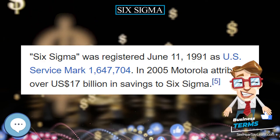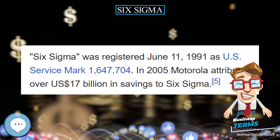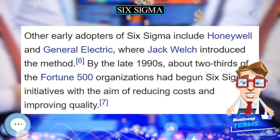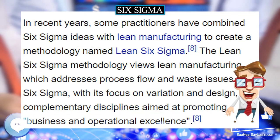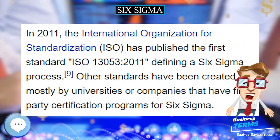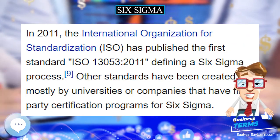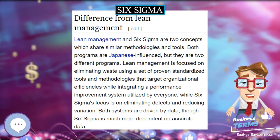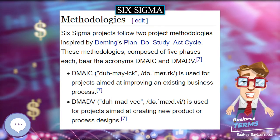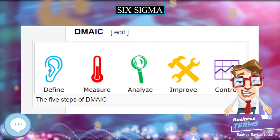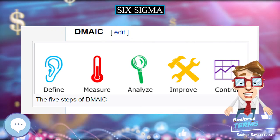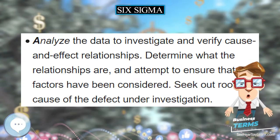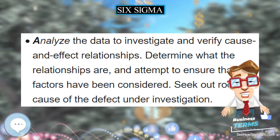General Electric and Motorola developed certification programs as part of their Six Sigma implementation, verifying individuals' command of the Six Sigma methods at the relevant skill level — green belt, black belt, etc. Following this approach, many organizations in the 1990s started offering Six Sigma certifications. In 2008, Motorola University co-developed with VATIV and the Lean Six Sigma Society of Professionals a set of comparable certification standards for Lean certification. Criteria for Green Belt and Black Belt certification vary; some companies simply require participation in a course and a Six Sigma project.